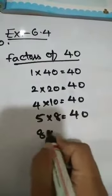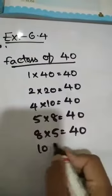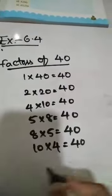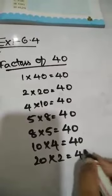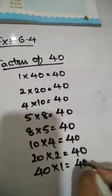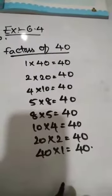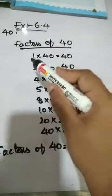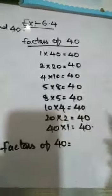8 into 5 equals 40. 10 into 4 equals 40. 20 into 2 equals 40. 40 into 1 equals 40. So factors of 40 are: 1, 2, 4, 5, 8, 10, 20, and 40.